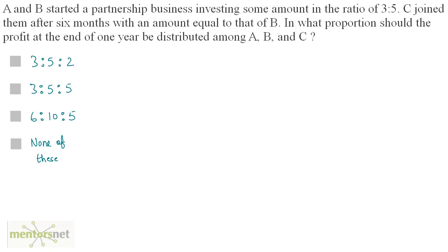A and B started a partnership business investing some amount in the ratio of 3 is to 5. C joined them after 6 months with an amount equal to that of B. In what proportion should the profit at the end of 1 year be distributed among A, B and C? Let us first calculate the time periods of each of the investments of A, B and C.